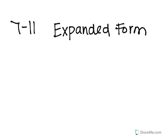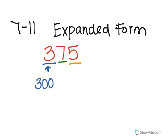Now I want to remind you what expanded form is. If I gave you this number, 375, we know 3 is in the hundreds place, 7 is in the tens place, and 5 is in the ones place. So this 3 is not worth 3, it's really worth 300. This 7 is not really worth just 7, it's really worth 70 because it's in the tens place. And this 5 is actually worth 5 because it's in the ones place. This is expanded form.